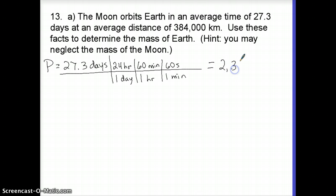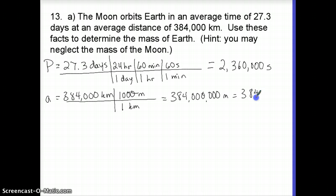2,360,000 kind of here. And the distance, a, is 384,000 kilometers times 1,000 meters in 1 kilometer would be 384 million meters. I'll switch to scientific notation now, 3.84 times 10 to the 8th meters. And now I can plug into Kepler's third law. Here it is.